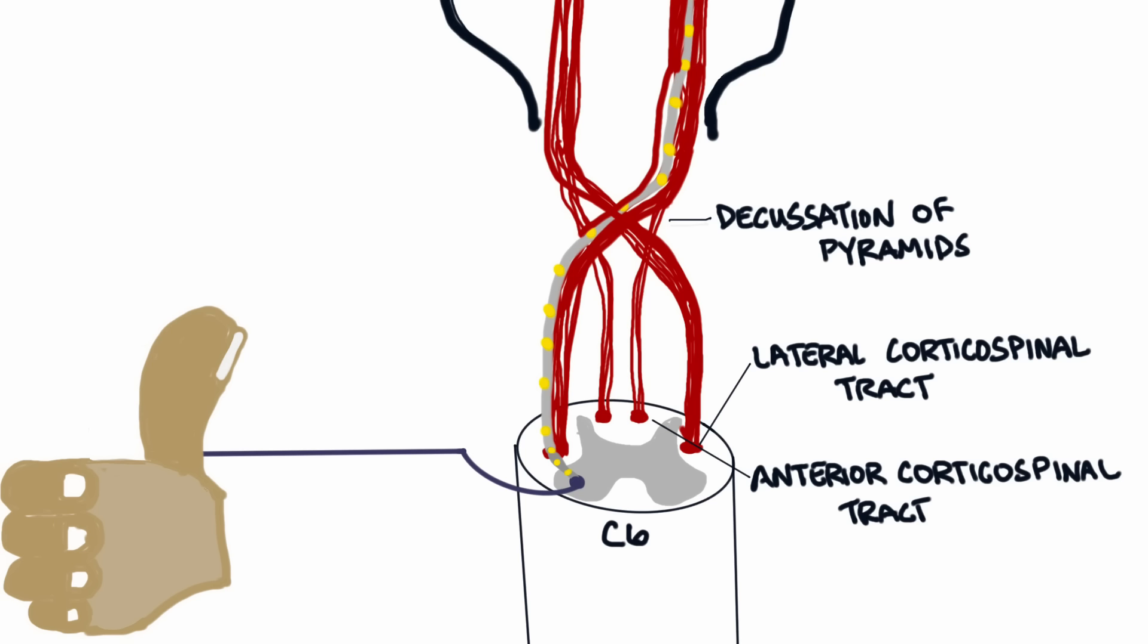10% of the motor neuron axons do not cross over at the decussation. They travel in the anterior corticospinal tracts. These axons primarily control the trunk and axial muscles, and they cross the midline at the spinal cord level before synapsing with their lower motor neurons.